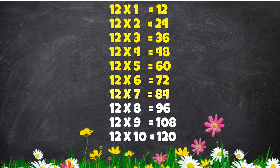Twelve sevens are eighty-four. Twelve eights are ninety-six. Twelve nines are one hundred and eight.